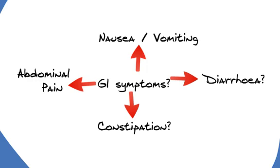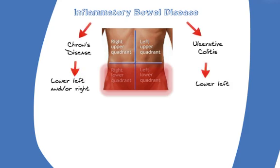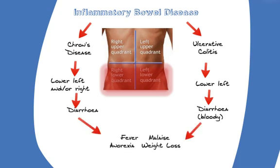Abdominal pain in the lower quadrants could be a symptom of inflammatory bowel disease. Pain in either or both quadrants is more likely to be Crohn's disease, as this can affect any part of the gastrointestinal tract. Pain in the lower left quadrant is more likely to be ulcerative colitis, as this tends to affect the distal colon and rectum. The other common symptom in inflammatory bowel disease is diarrhoea, which tends to be bloody in ulcerative colitis. During severe attacks, constitutional symptoms such as fever, malaise, anorexia and weight loss are often present. Inflammatory bowel disease can be confirmed by sigmoidoscopy.